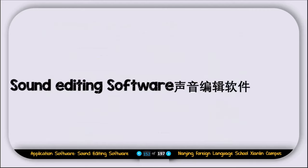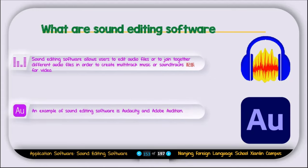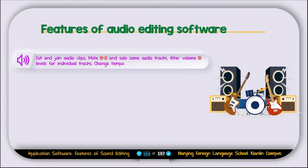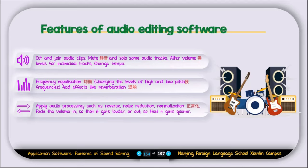Now let's talk about sound editing software. Sound editing software allows users to edit audio files or join together different audio files to create multi-track music or a soundtrack for a video. Examples of sound editing software are Audacity and Adobe Audition. Features include: cut and join audio clips; mute and solo audio tracks; alter the volume levels of individual tracks; change the tempo; adjust frequency equalization — changing the number of high and low pitch frequencies; add effects like reverb; apply audio processing such as reverse, noise reduction, normalization; and fade volume in or out.